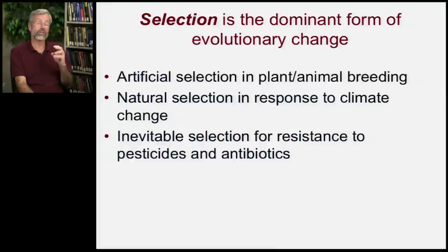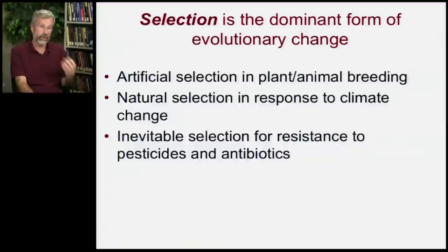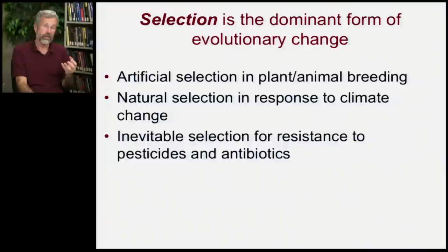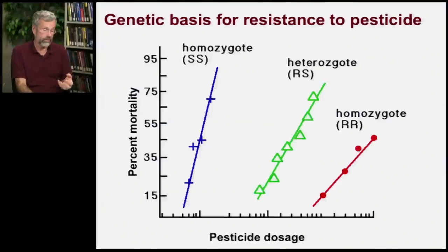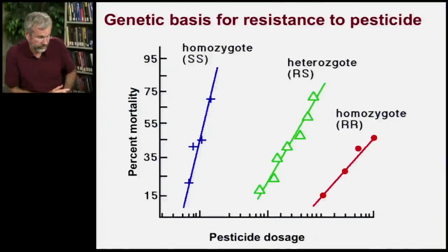And so now we're seeing resistant strains of bacteria and resistant strains of weeds to the poisons that we set out to try to control them.